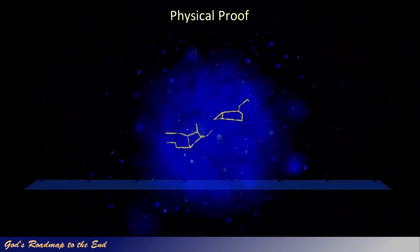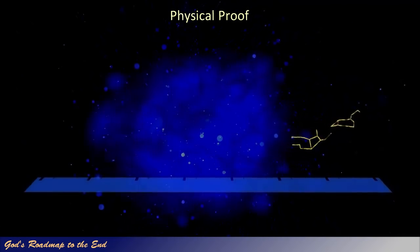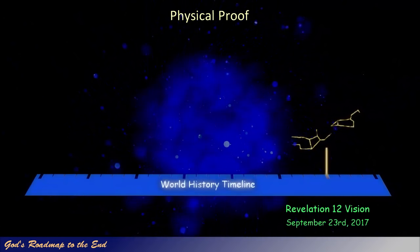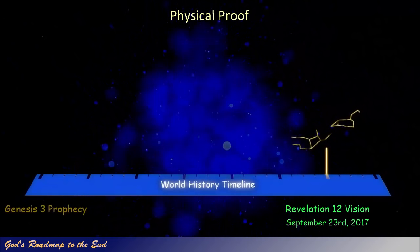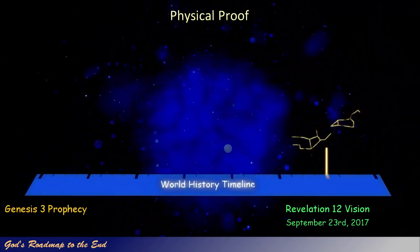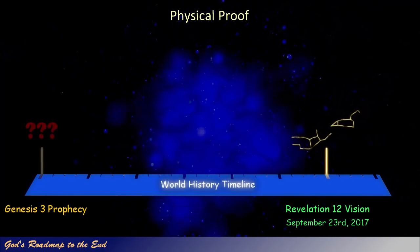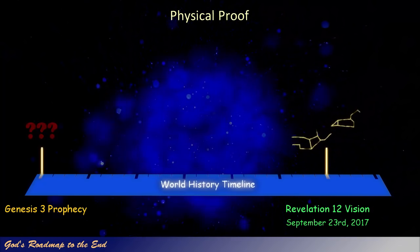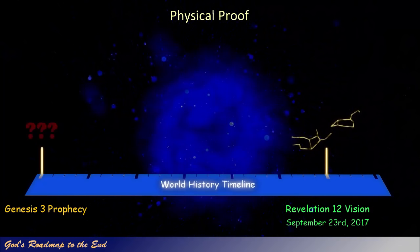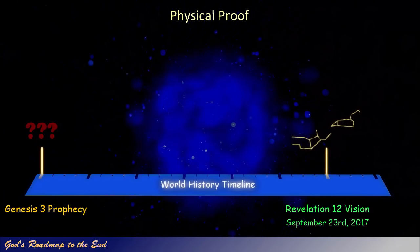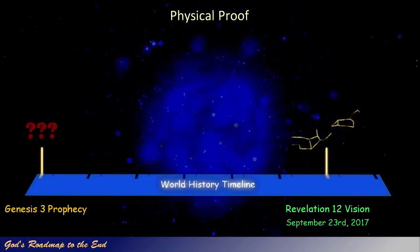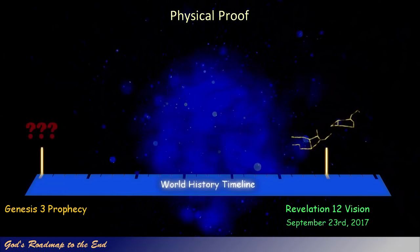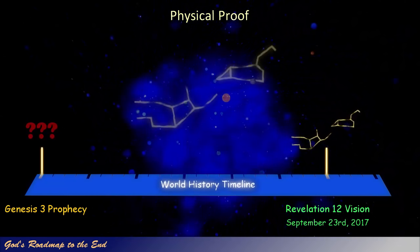After seeing how the vision given to John in Revelation 12 is marked with a physical celestial representation, and how it is linked to the prophecy given in Genesis 3 verse 16, I wondered if God would also mark the prophecy given to man in the Garden of Eden with a similar celestial marker. This, in my opinion, would confirm and provide physical proof that we are indeed looking at the correct prophecy and vision that Daniel was told to seal up.